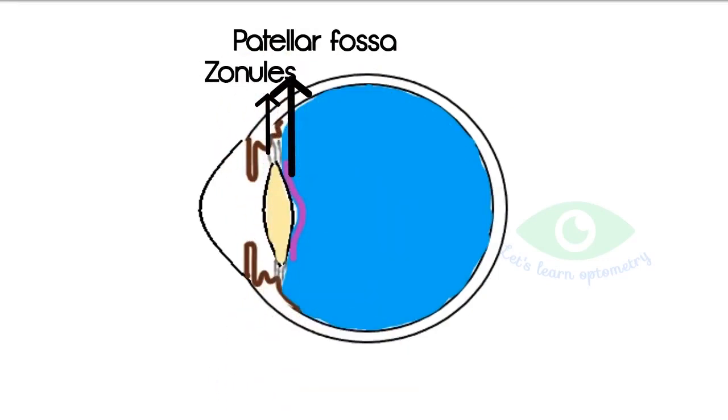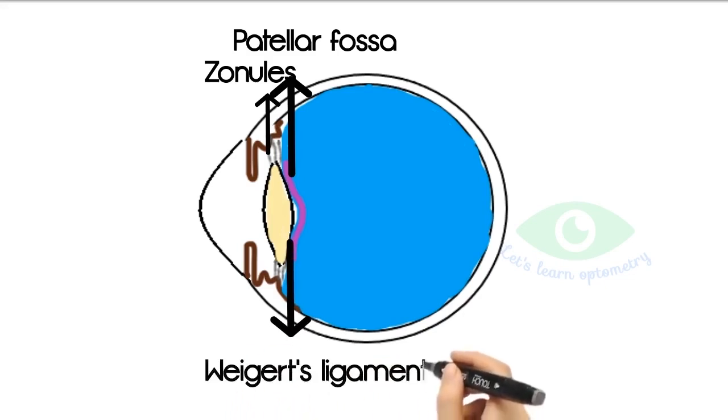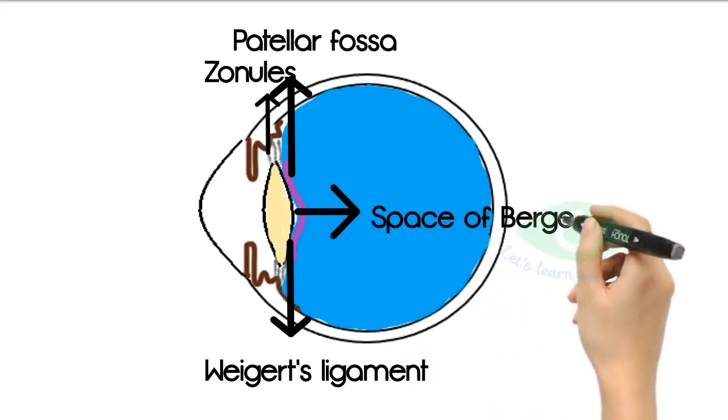The posterior lens surface is attached to the anterior vitreous face by the circular ring of adhesion called hyaloid capsular ligament or Wieger's ligament. Within this ring is a potential space, an area of non-adhesion between the vitreous and the lens called the retrolental space of Berger.